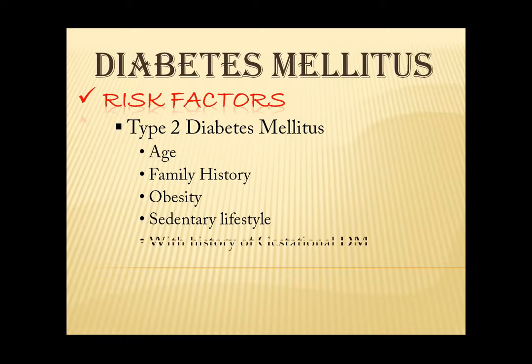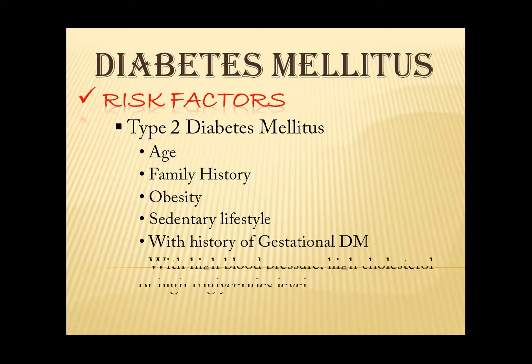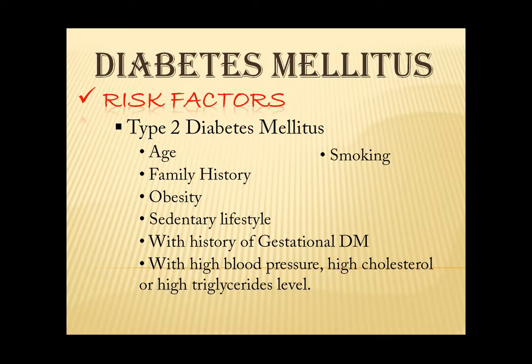Next is history of gestational diabetes mellitus. Next, with high blood pressure, high cholesterol, and high triglycerides level. Smoking — tobacco use can increase the blood sugar level and can also cause insulin resistance. The more cigarettes you smoke, the greater the risk of having diabetes mellitus. Lastly, alcohol intake — too much alcohol intake can cause chronic inflammation of the pancreas which can result to the impairment of insulin production by the beta cells.